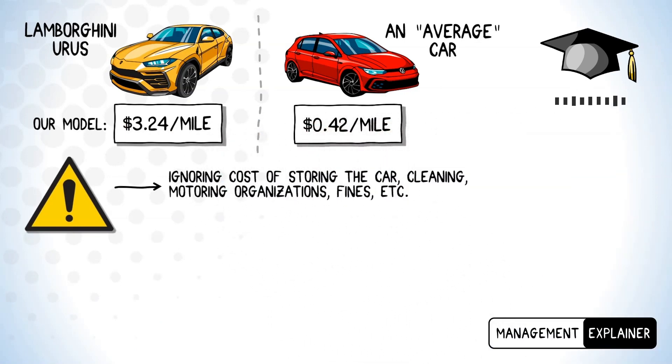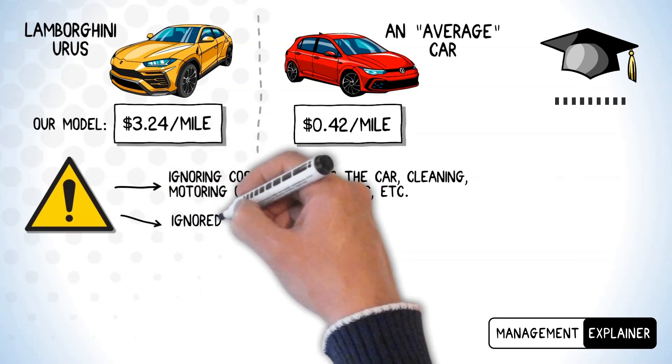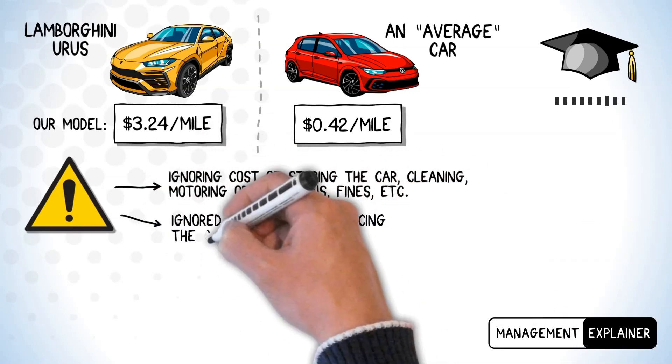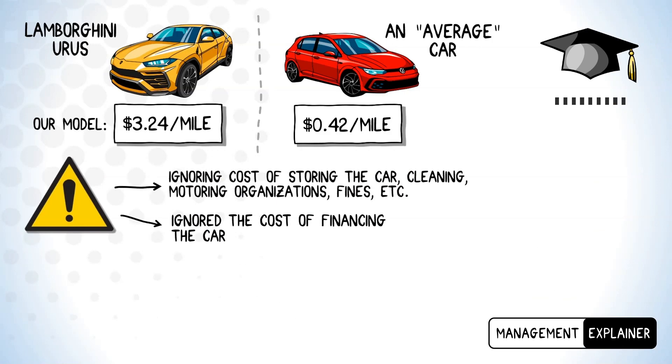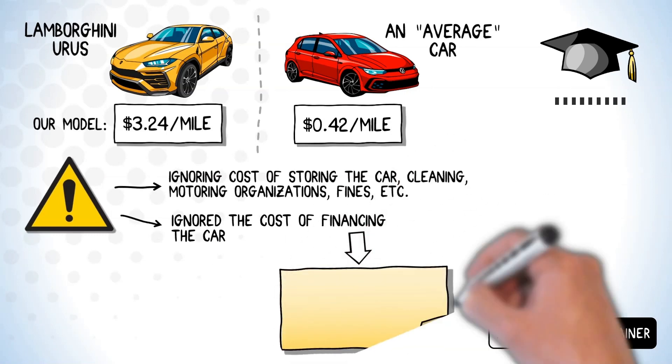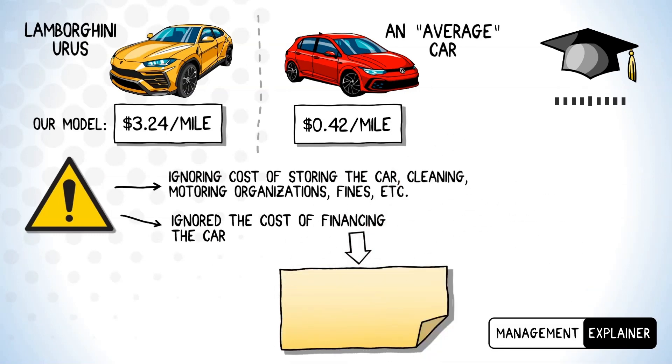Of course our model ignores a bunch of things, such as the costs of storing the car in a garage, cleaning, subscriptions to motoring organizations, taking driving lessons, receiving fines, and so on. But perhaps most importantly, we've ignored the costs of financing the car. This should really be factored in because most people don't have 295k lying around, or because the owner could obtain some other returns from this money.